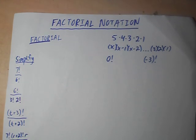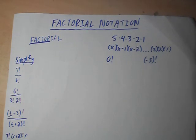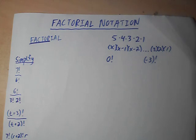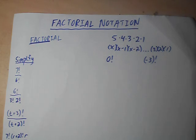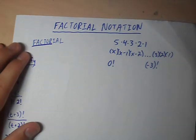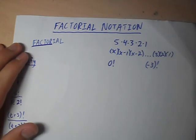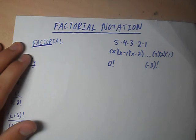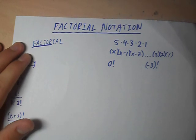Today we're talking about factorial notation. When you use factorial, what you're doing is condensing a bunch of factors, as the name suggests, that are being decreased by one each term into a single term. I'll introduce a little bit of new terminology and new symbols that we're going to be using while dealing with factorials.